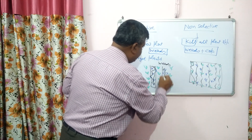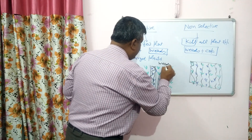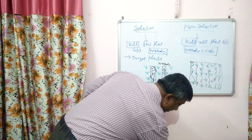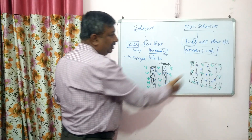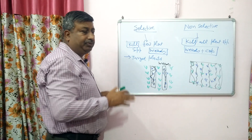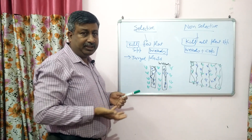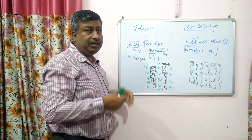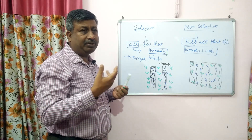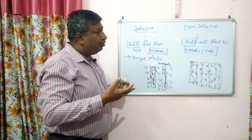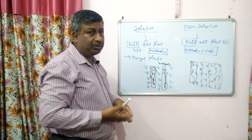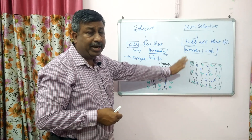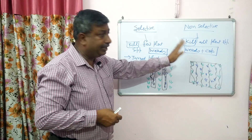In the case of selective herbicide, crops survive. While in the case of non-selective herbicide, crops do not survive. Then what is the advantage? If the crop does not survive after application of non-selective herbicide spray, non-selective herbicides are not applied in standing crops.